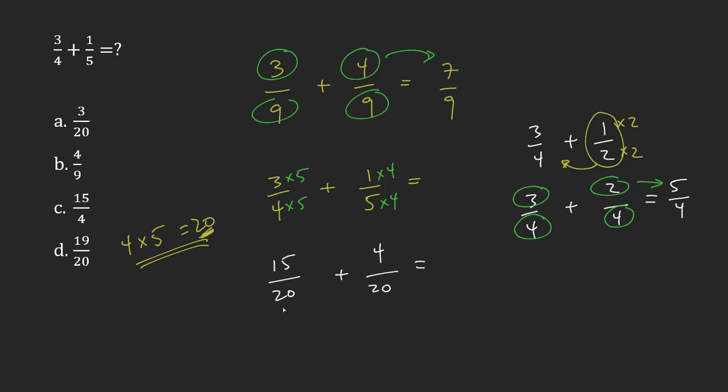So 15 twentieths plus 4 twentieths gives me, remember you can just add the tops when the bottoms are the same, gives me 19 twentieths. And so my answer is D.